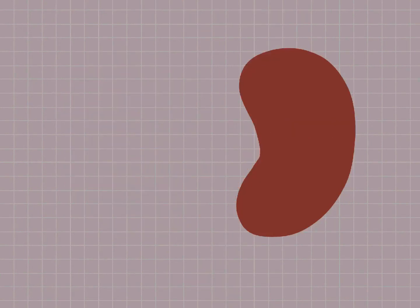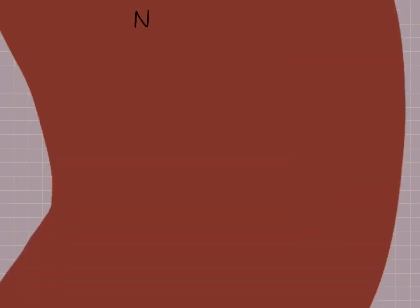So how do the kidneys actually work? To understand that, we have to zoom in quite a lot and focus on the part of the kidney called the nephron.